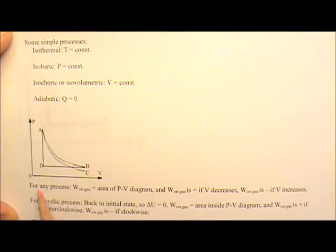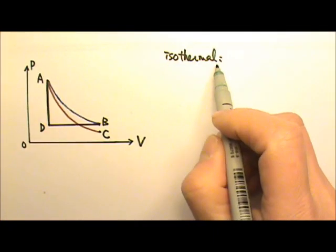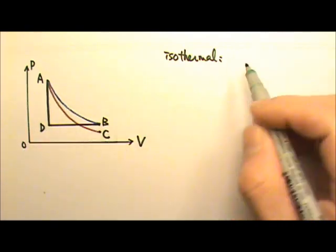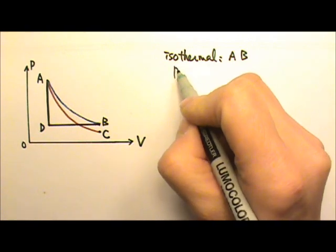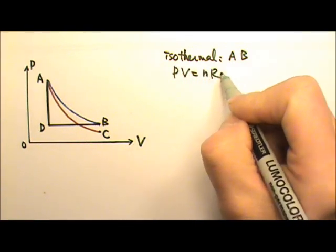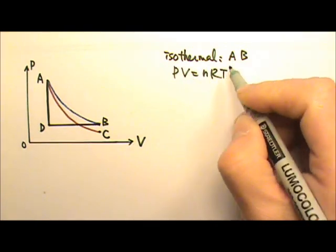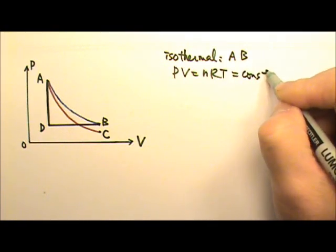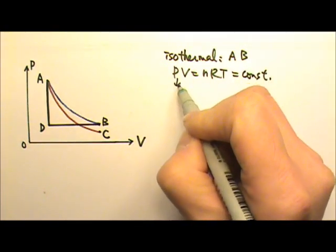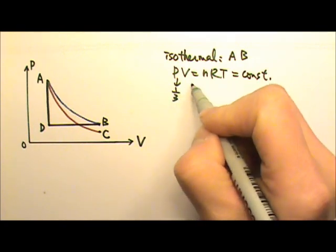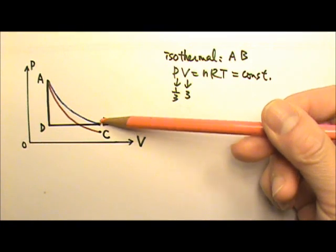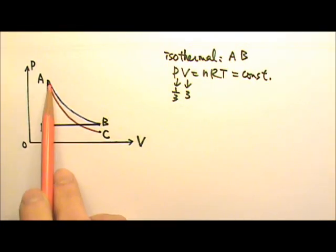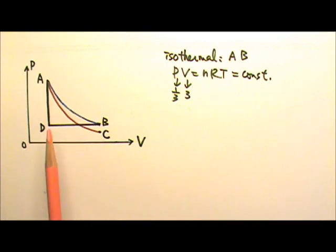Now let's look at these special processes. The isothermal path is the AB. Because the isothermal means temperature is the same and PV equals nRT, if the temperature is a constant, that means P times V is a constant. That means if the pressure becomes one-third, the volume would triple. That's why it's A to B or B to A, depending on whether the volume is increasing or volume is decreasing.